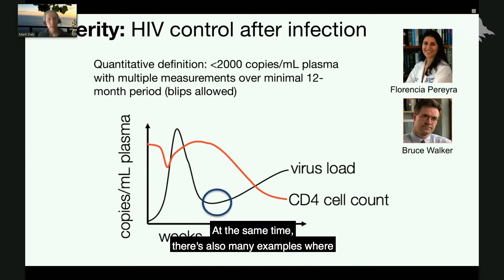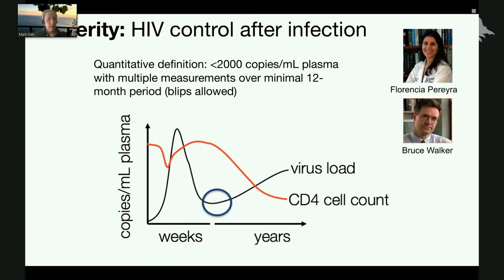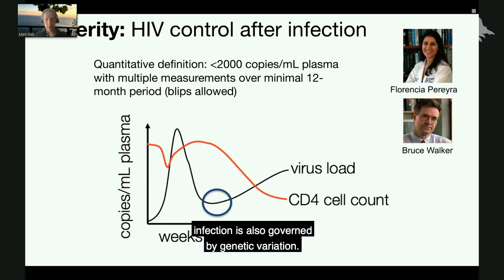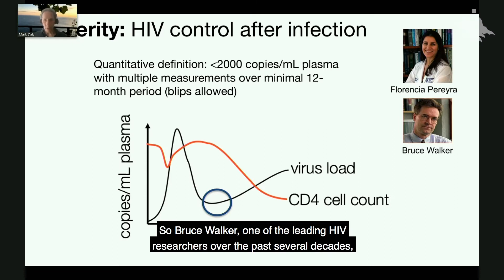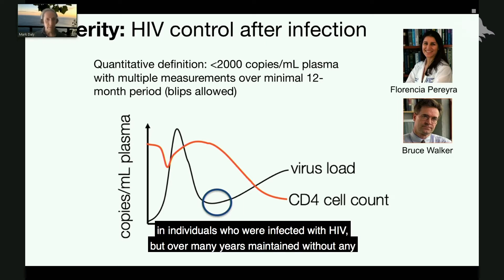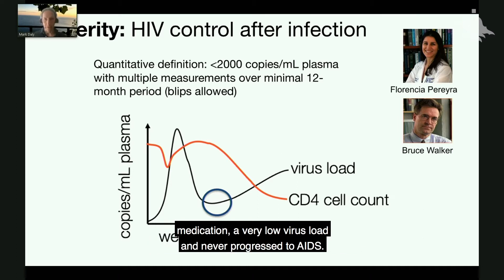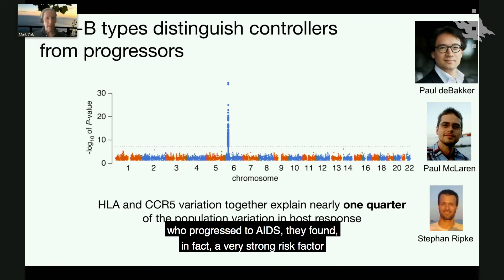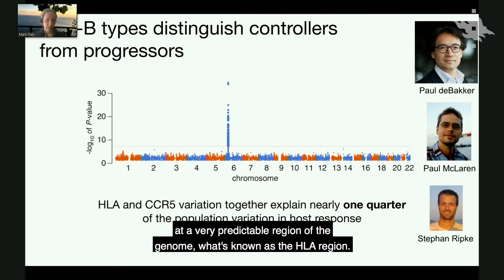Now, at the same time, there are also many examples where the response of the immune system and the health of the person after infection is also governed by genetic variation. Bruce Walker, one of the leading HIV researchers over the past several decades, conducted a study that studied the genetic patterns in individuals who were infected with HIV but, over many years without any medication, maintained a very low virus load and never progressed to AIDS. And in studying the genomes of those individuals compared with individuals who progressed to AIDS, they found a very strong risk factor at a very predictable region of the genome — what's known as the HLA region.